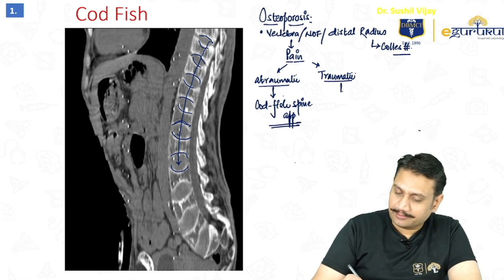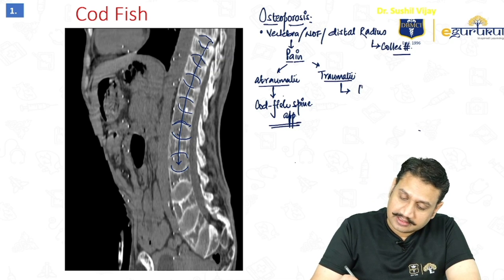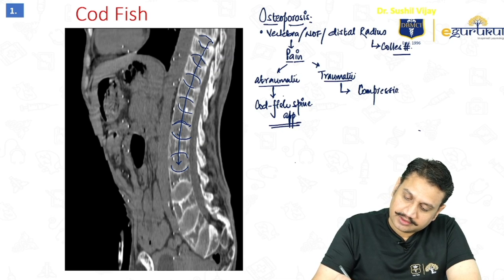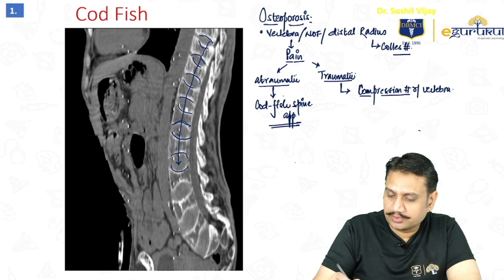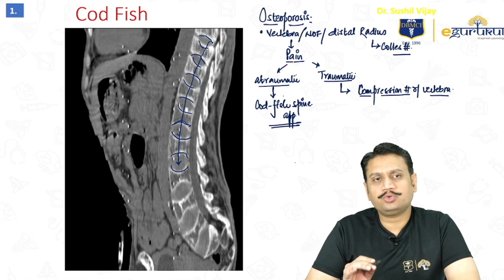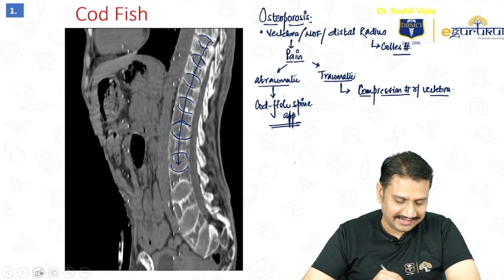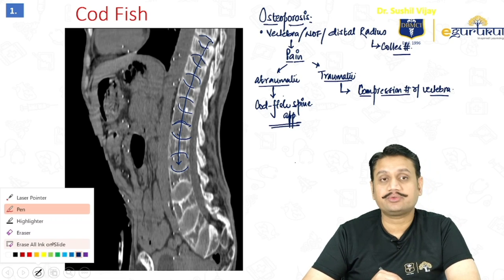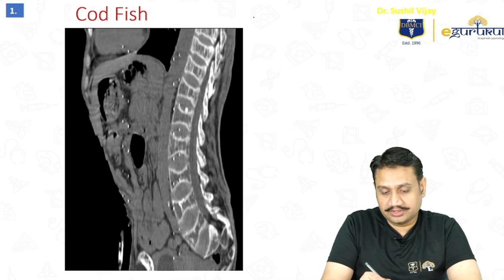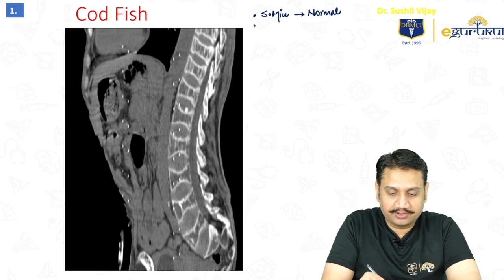Traumatic ones will come to you with a compression fracture of the vertebra. So compression fracture of the vertebra will be a traumatic kind of change, and codfish spine appearance will be an atraumatic kind of change. Now, if you want to actually diagnose a patient of osteoporosis, what is the ideal gold standard way? The concept should be clear that serum mineralization is supposed to be normal.